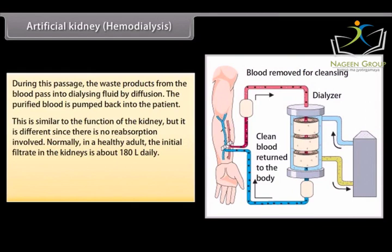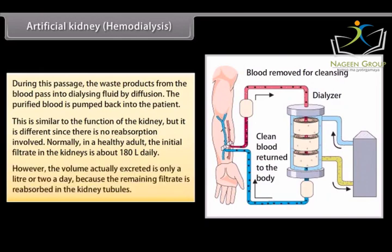Normally in a healthy adult, the initial filtrate in the kidneys is about 180 liters daily. However, the volume actually excreted is only one to two liters a day, because the remaining filtrate is reabsorbed in the kidney's tubules.